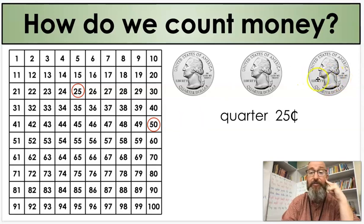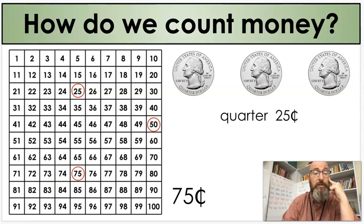Now, if I'm going to add a third quarter, how much am I adding again? 25, because a quarter is worth 25 cents. I'm going to use what I know about a hundreds chart again, and I'm going to count by tens as far as I can. 10, 20, 21, 22, 23, 24, 25. So when I have three quarters, I have 75 cents.